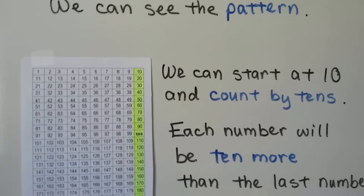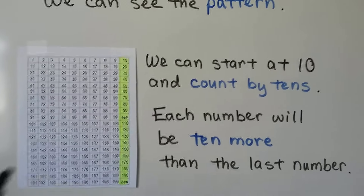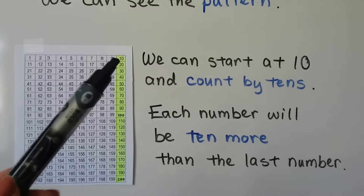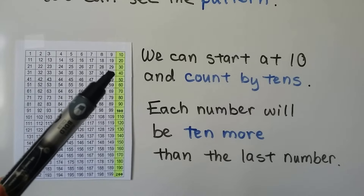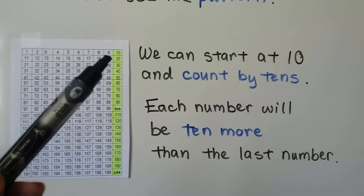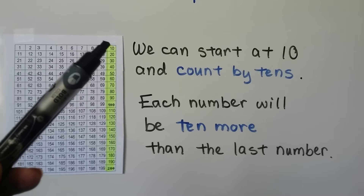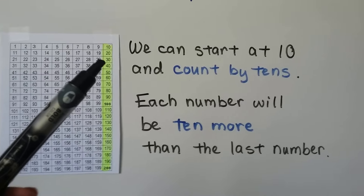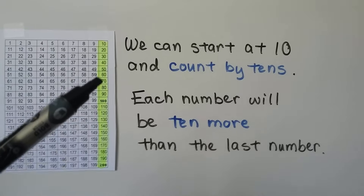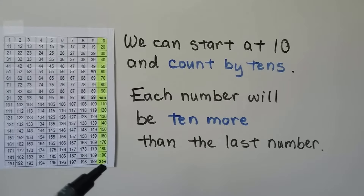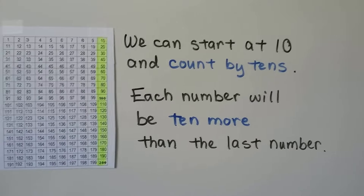We can see the pattern. We can start at ten and count by tens. Each number will be 10 more than the last number. 20 is 10 more than 10. 30 is 10 more than 20. Coming down the column, each number is 10 more than the number before it.